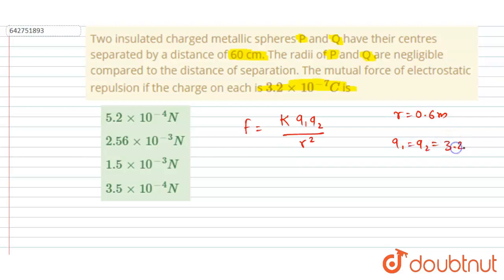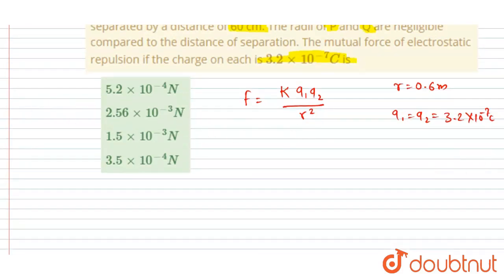And it equals 3.2 times 10 to the power minus 7 coulombs. Okay, so you can just put the value to find out the mutual electrostatic repulsive force. So if I write, the force will be equal to K is 9 times 10 to the power 9. So this will be the value of K.